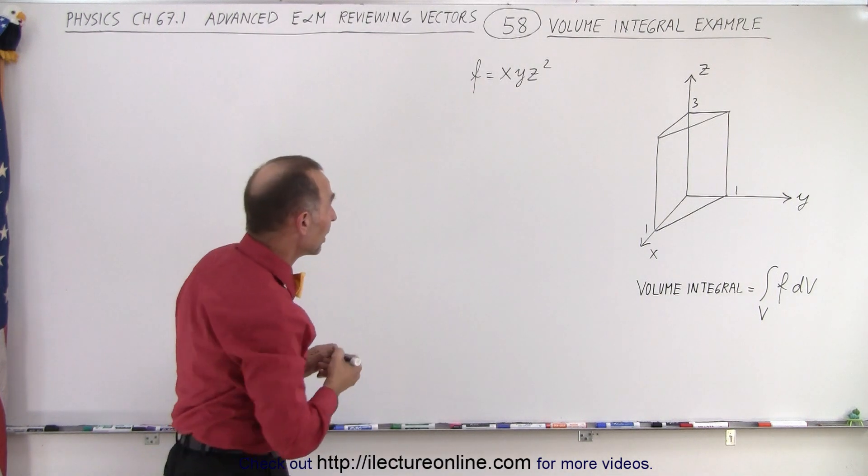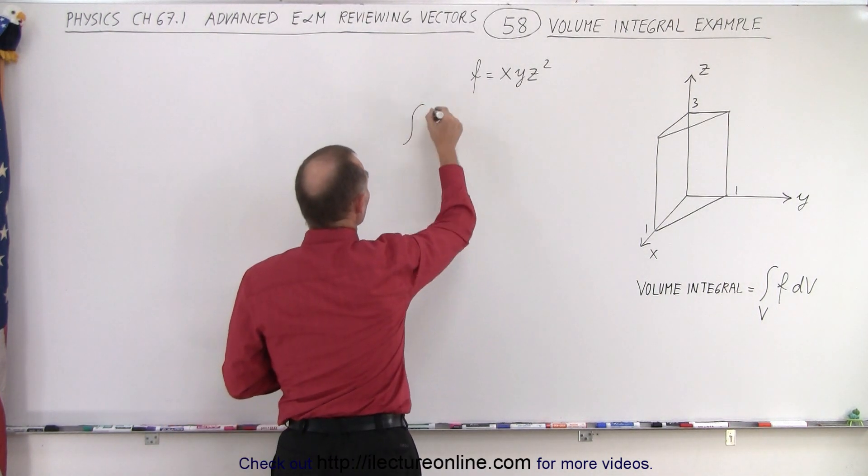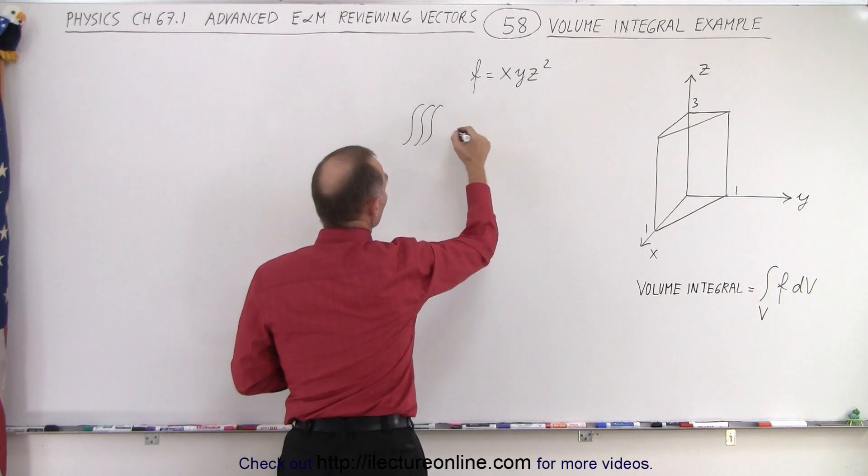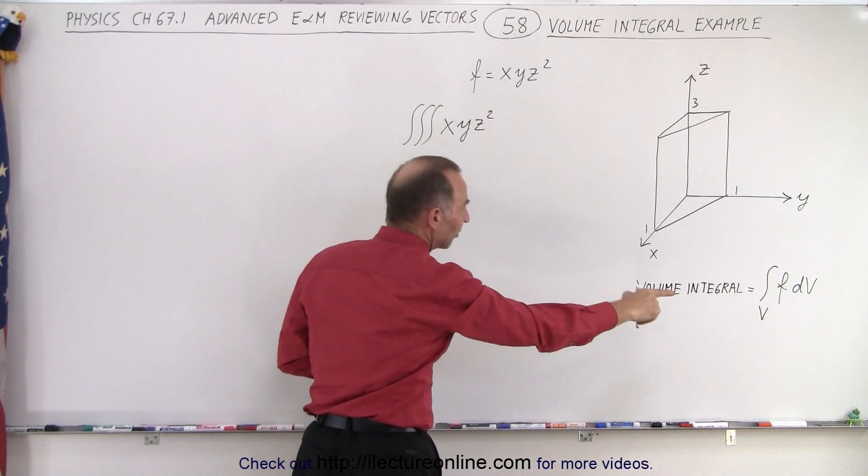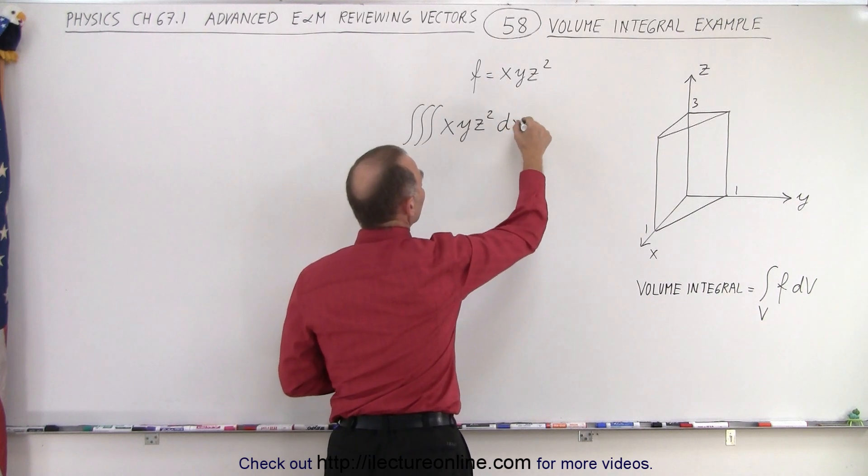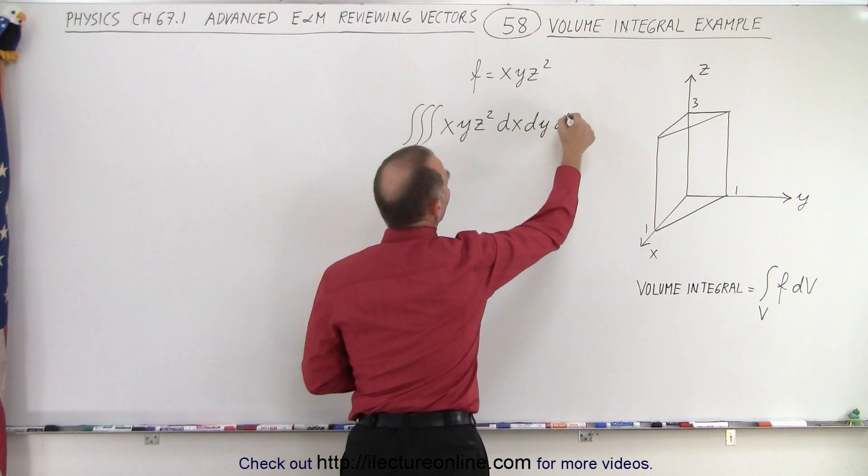See what that looks like. So that means we're going to do a triple integral of the function x, y, z squared, multiplied times the dv, which can be defined as dx, dy, and dz.